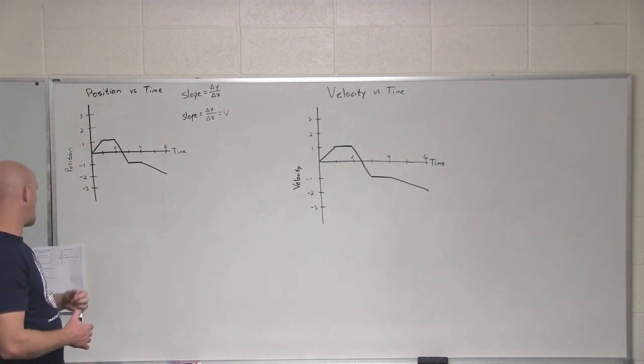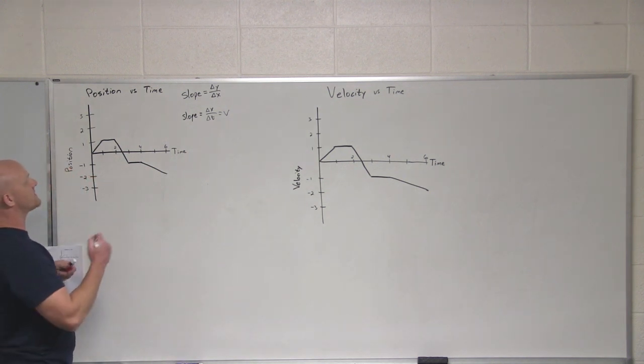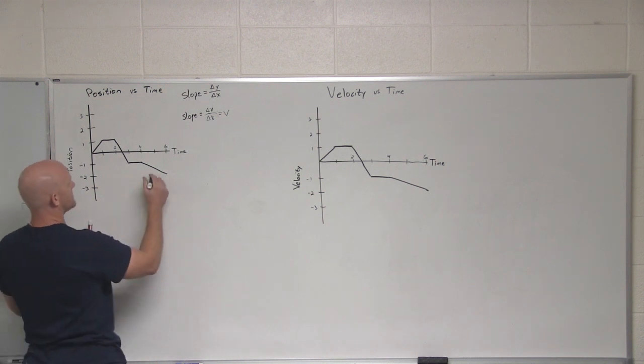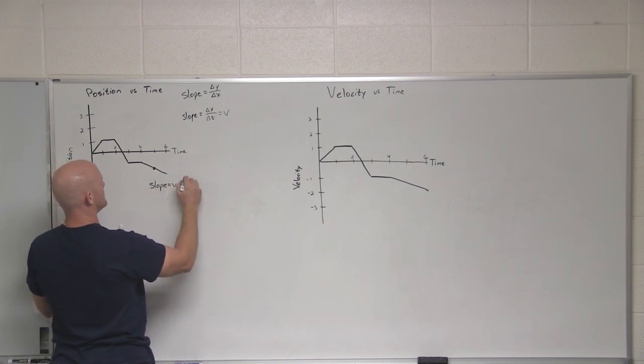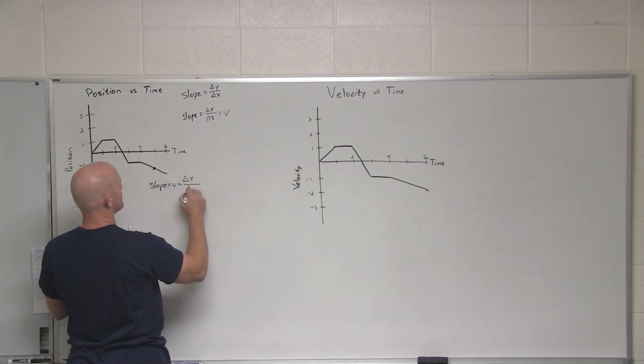So the next question is, what is the velocity at t equals five seconds? If it's asking what is the velocity, that really wants what is the slope here? So slope right at five seconds is going to equal the change in y over change in x, or in this case, your displacement over time.